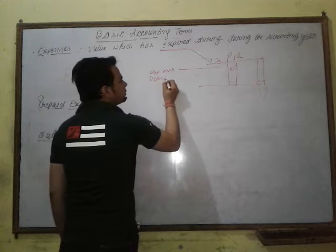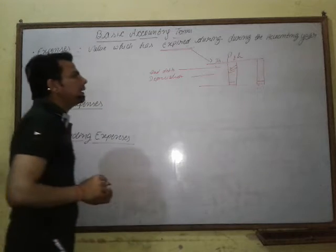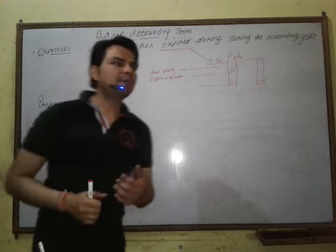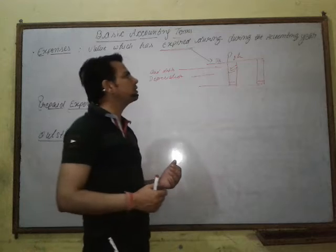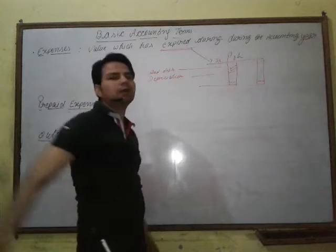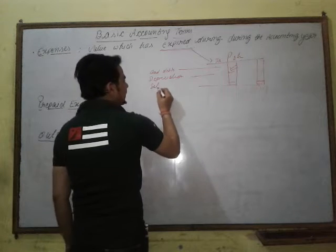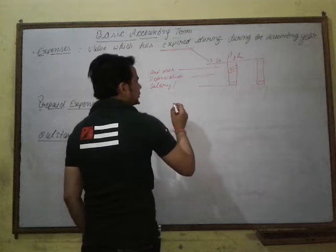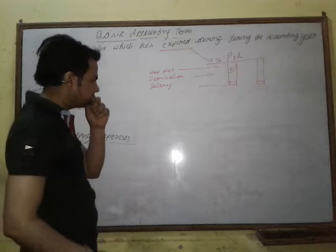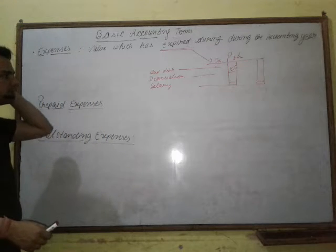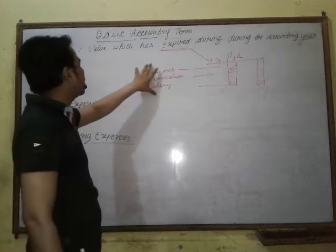Depreciation is the reduction in the value of any asset, and it is also considered an expense. It is the value that expires during the accounting year. Note that salary and wages are written in the trading account, while items like rent paid and commission paid are written in the P&L account — these are all examples of expenses written off in one accounting year.